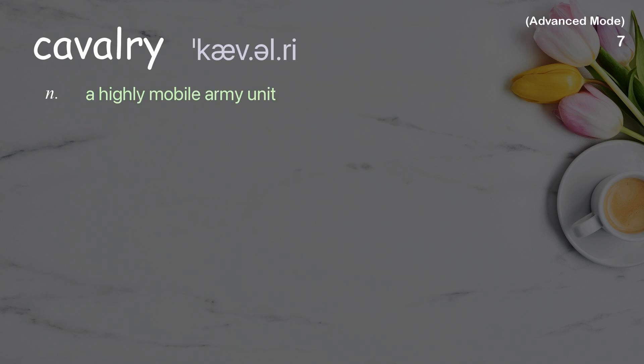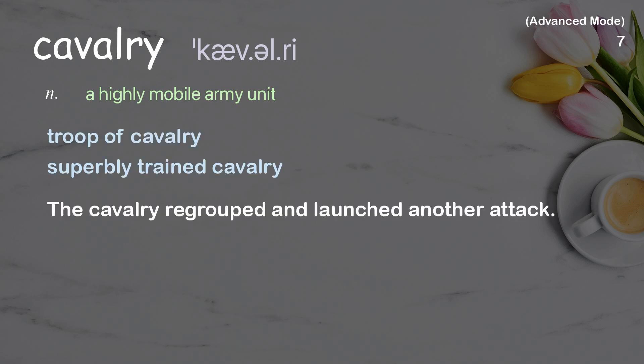Cavalry: a highly mobile army unit. Examples: troop of cavalry, superbly trained cavalry. The cavalry regrouped and launched another attack.